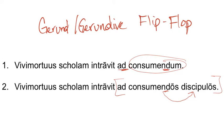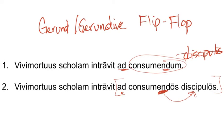Basically, the Romans didn't like it when a gerund took a direct object. For example, in sentence one, we could have said the zombie entered the school for the purpose of eating, and then put what the zombie was going to eat in the accusative case — for the purpose of eating the students. However, the Romans didn't like it when the gerund took that accusative object. So instead, they flipped it around. Instead of giving consummendom a direct object, they took ad and consummendos, turned that gerund into a gerundive modifying discipulos. So instead of saying for the purpose of eating the students, they literally said for the purpose of the students about to be eaten — which is why we translate it as for the purpose of eating the students.